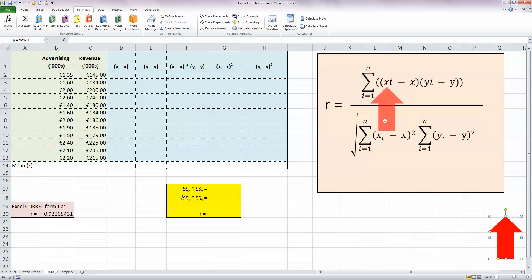The first part up here is each value of X, which in this case here is going to be my advertising, minus the mean of X, and that's multiplied by the values for Y, which is my revenue figures, minus the mean of Y. Then underneath I've essentially got the same thing, I've got my X values minus the mean of X, only this time I'm going to square it, and I've got Y minus the mean of Y, and I'm also squaring that.